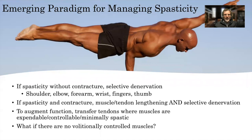There's an emerging paradigm for managing spasticity. If there's spasticity without contracture, selective de-innervation is probably the answer — whether at the shoulder, elbow, forearm, wrist, fingers, or thumb. If spasticity and contracture are both an issue, then muscle-tendon lengthening and selective de-innervation. To augment function, tendon transfers where muscles are expendable, controllable, and minimally spastic. But what if there are no volitionally controlled muscles? That's a bigger problem.